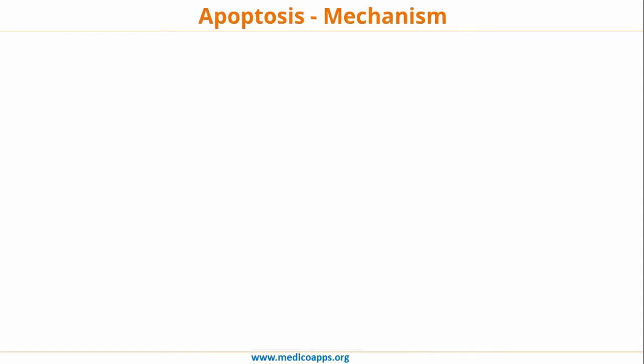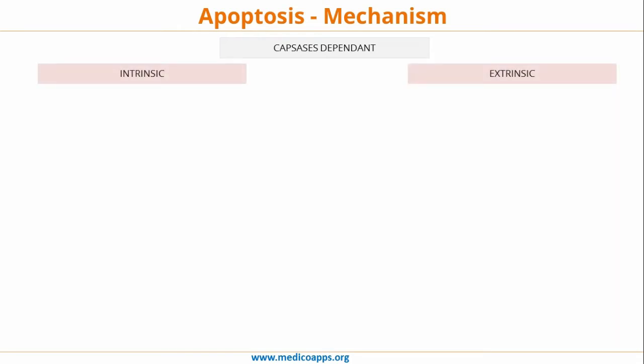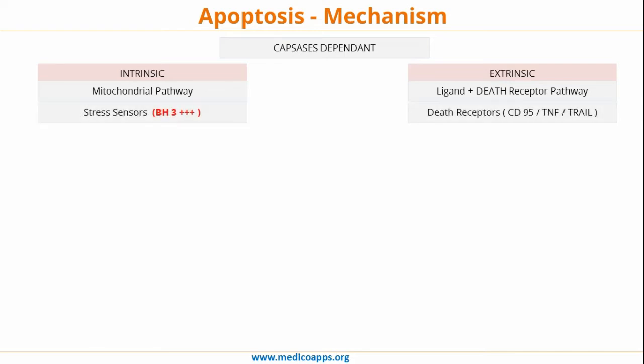Let's look at the mechanism of apoptosis. Apoptosis is caspase-dependent, and there are two pathways: the intrinsic pathway and the extrinsic pathway. The intrinsic pathway is also called the mitochondrial pathway, whereas the extrinsic pathway is called the ligand or death receptor pathway. The intrinsic pathway is activated by stress sensors — the stress sensor in the cell is BH3 — whereas the extrinsic pathway is activated by death receptors: CD95, tumor necrosis factor, and TRAIL.